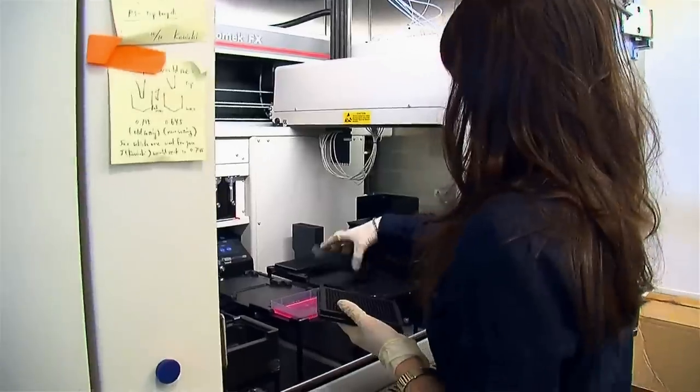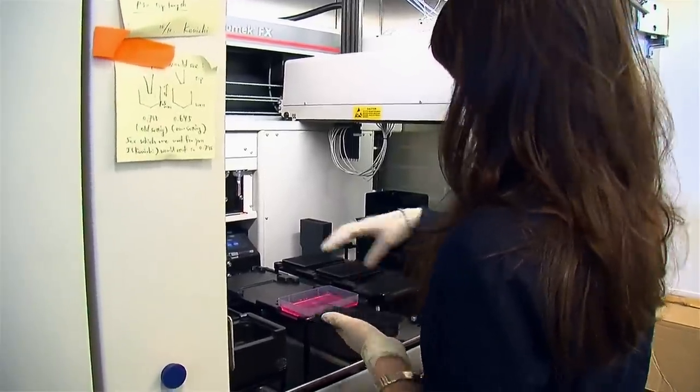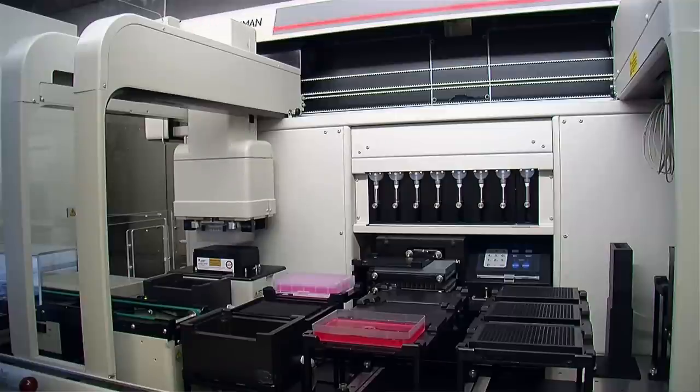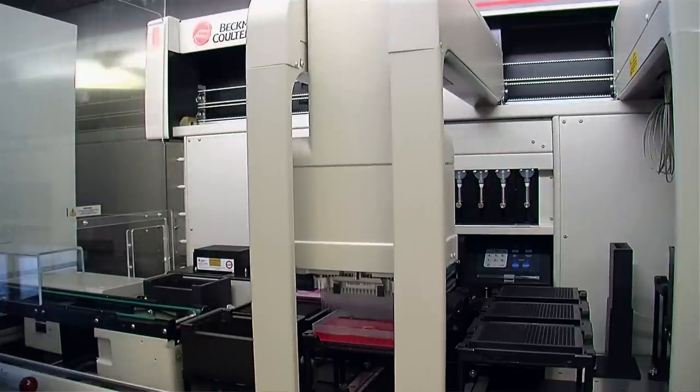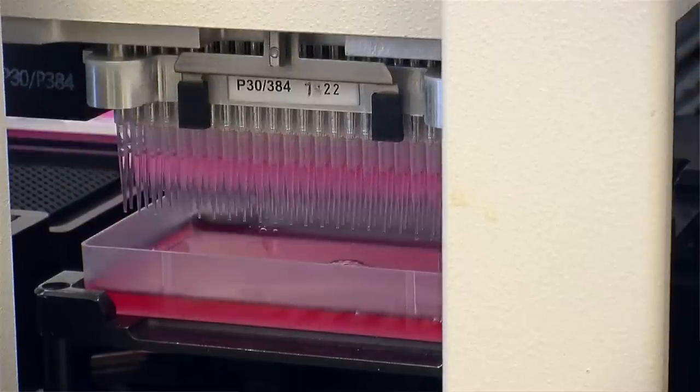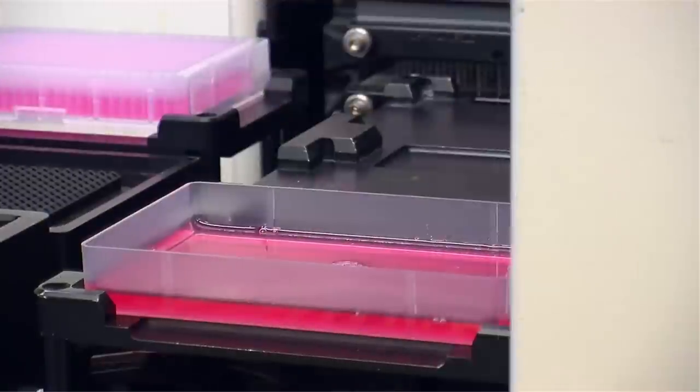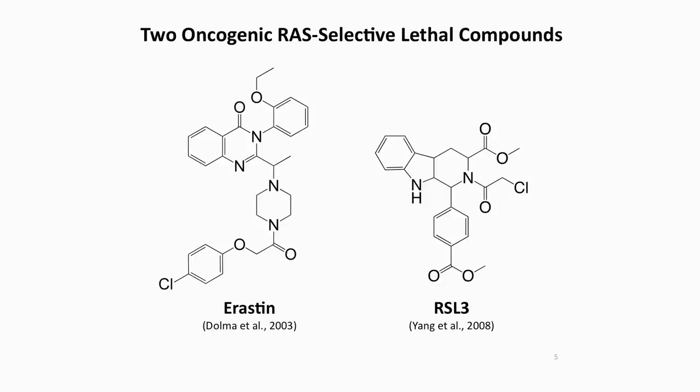A major interest of my lab for several years has been identifying compounds that are selectively lethal to tumor cells containing mutant RAS proteins. To date, we screened more than a million compounds in this system and identified several that selectively kill RAS mutant tumor cells, including two that we'll talk about today, named Erastin and RSL3.